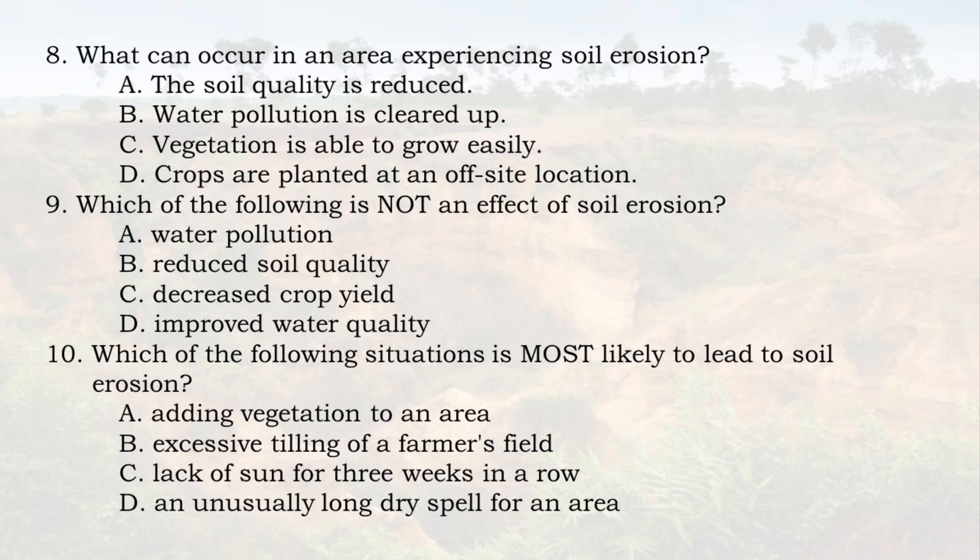10. Which of the following situations is most likely to lead to soil erosion? A. Adding vegetation to an area. B. Excessive tilling of a farmer's field. C. Lack of sun for three weeks in a row. D. An unusually long dry spell for an area.